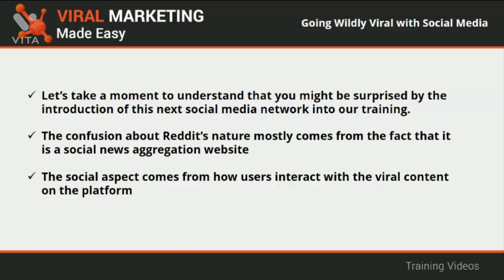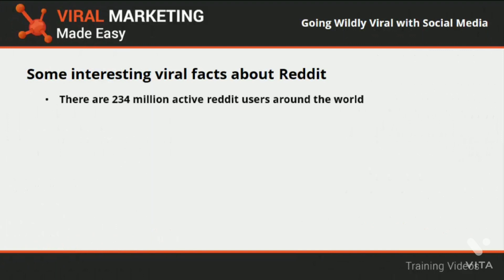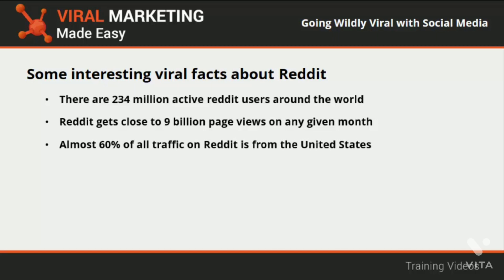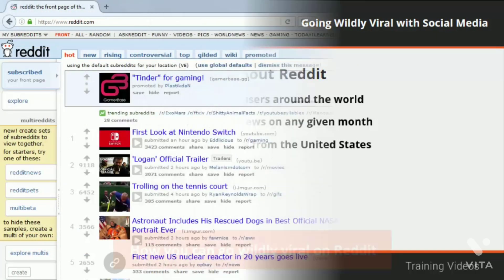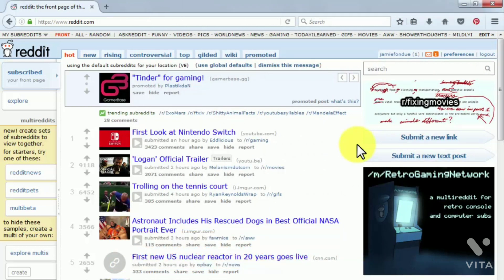Some interesting viral facts about Reddit: there are 234 million active Reddit users around the world; Reddit gets close to 9 billion page views on any given month; and almost 60% of all traffic on Reddit is from the United States. Going wildly viral on Reddit depends a lot on both the quality of your content and its subject matter. The main hub for viral content on Reddit is its front page, where all the really viral content goes.